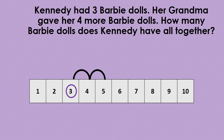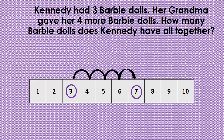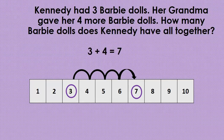One, two, three, four. We ended on the number seven. So we know Kennedy has seven Barbie dolls all together. Three plus four equals seven.